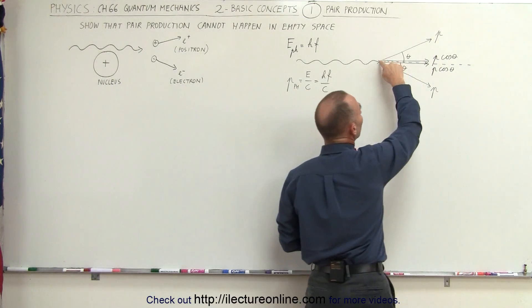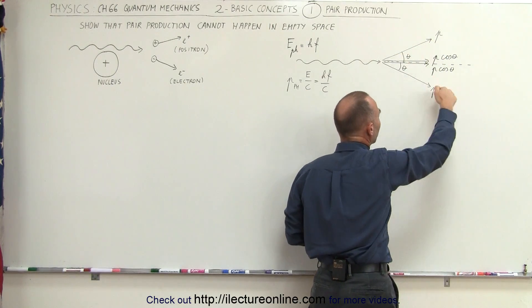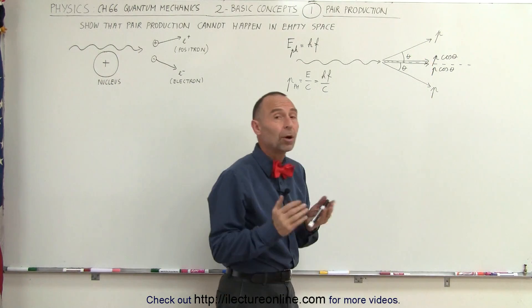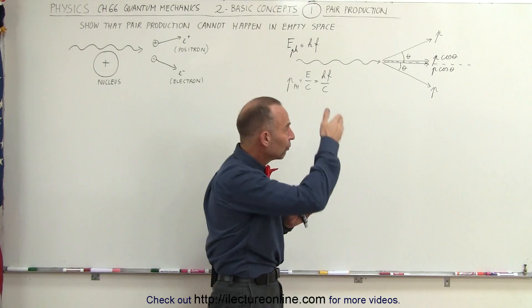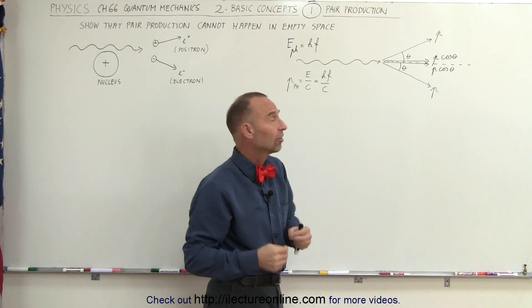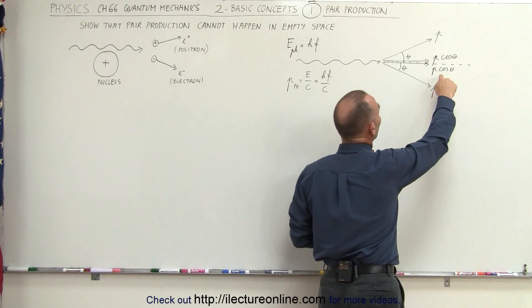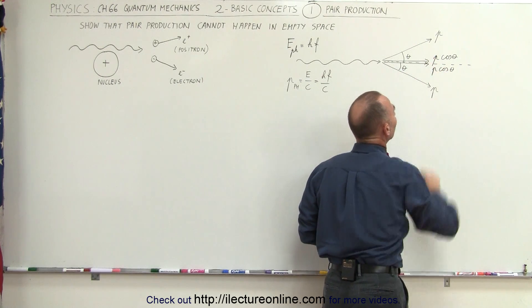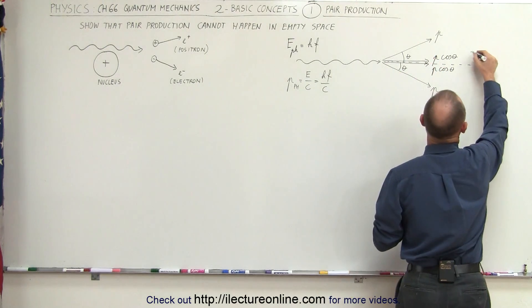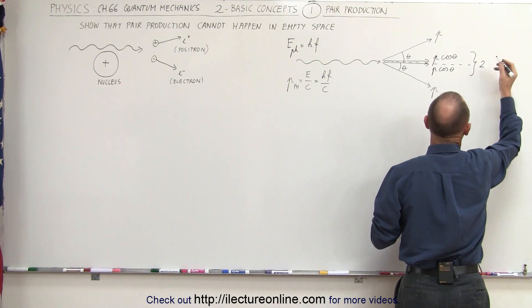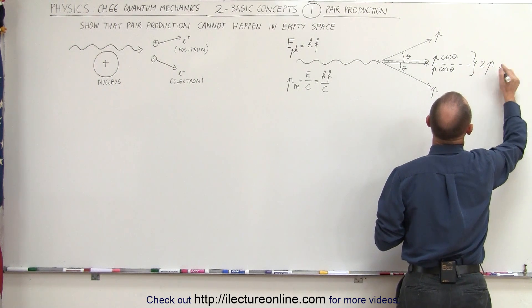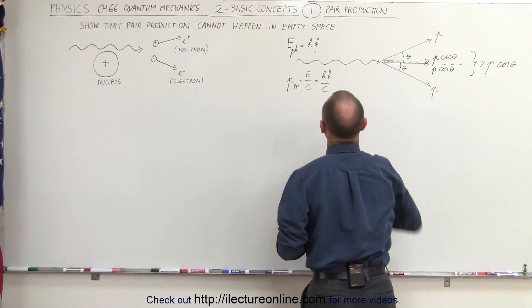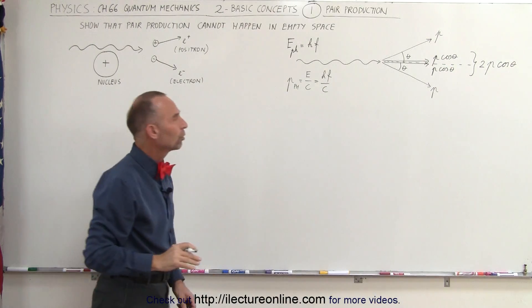If p is the momentum of the positron and p is the momentum of the electron, assuming them to be the same, and assuming that the angles must be the same — otherwise momentum cannot be conserved in the y direction — since the masses are the same, that means the total momentum after pair production must be 2p times the cosine of theta. So the total momentum after the pair production is 2p times the cosine of theta, which must equal the momentum of the photon before the pair production.